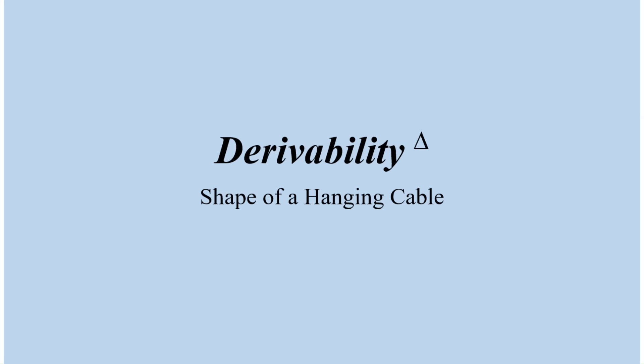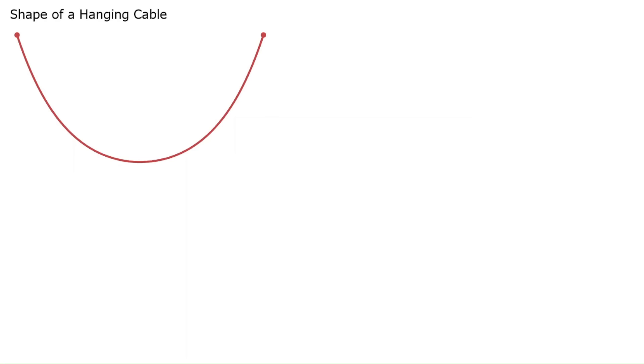Welcome to Derivability. Today we're going to take a look at the shape of a hanging cable. The shape of a cable is known as a catenary. It's sometimes mistaken for a parabola, but it's not.